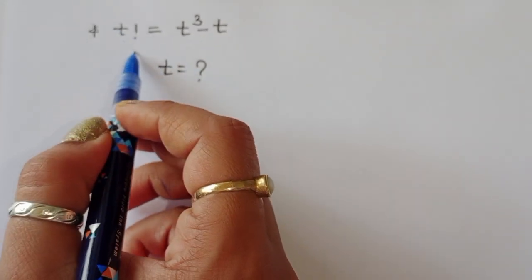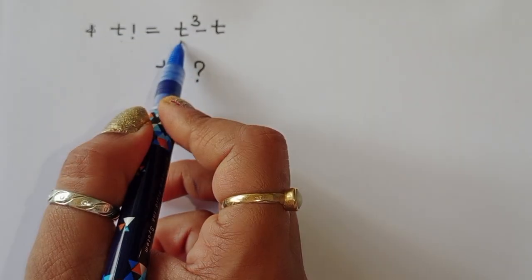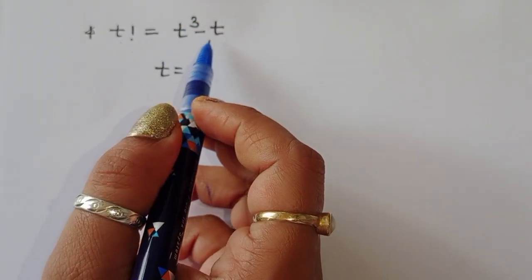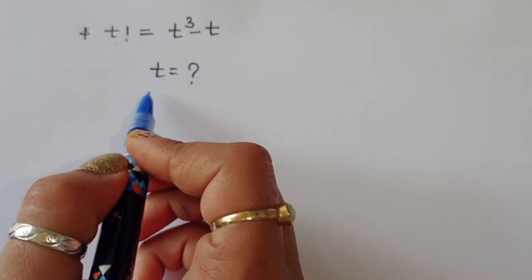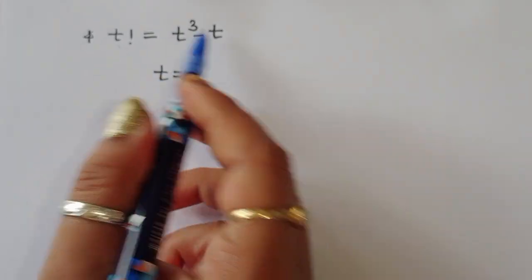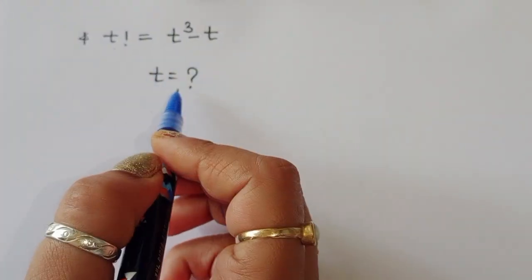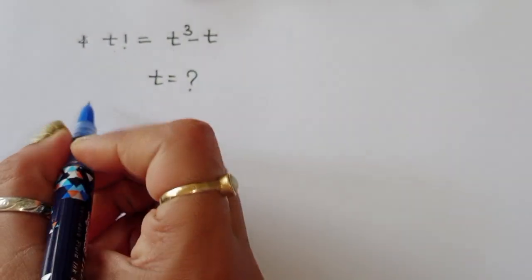The question is: factorial of t is equal to t cubed minus t. We have to find out the value of t. Let's see the solution.